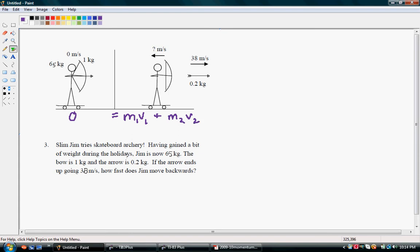Now, so when we go to plug that in, 0 equals, alright, remember Jim is here but he also still has the bow which is another kilogram. So we actually have 66 kilograms here times his velocity.